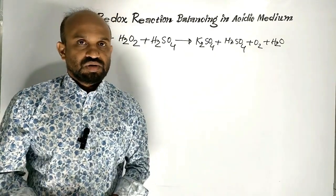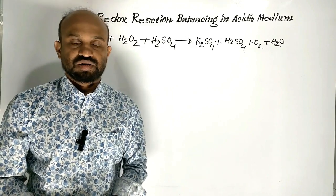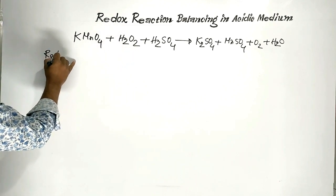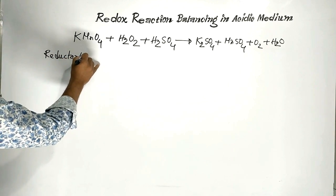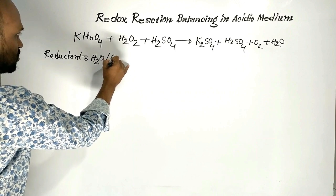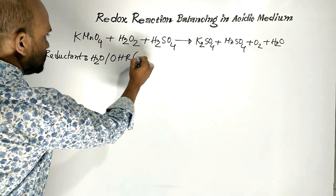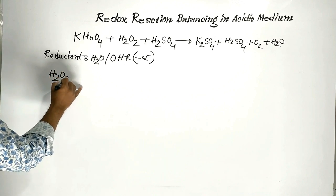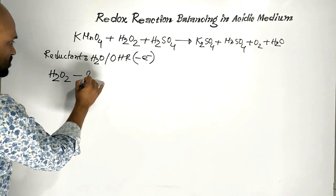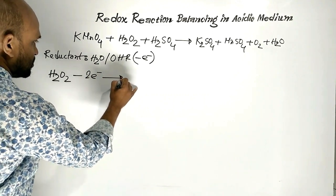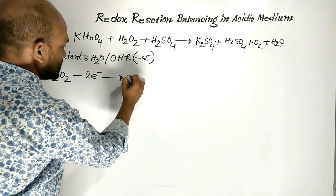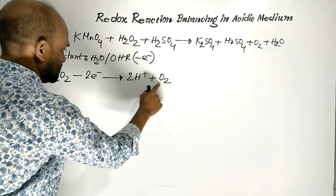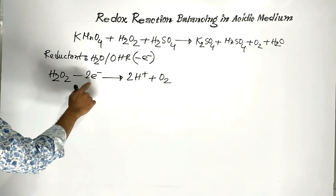This is a redox reaction. Now let us balance the reaction by the ion-electron method. In this reaction, hydrogen peroxide is the reductant, causing the oxidation half-reaction through release of electrons. Hydrogen peroxide releases two electrons, and as a consequence, hydrogen peroxide turns into two protons and one molecule of oxygen.